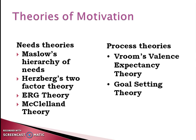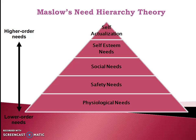The most traditional theory of motivation is Maslow's hierarchy of needs. It says there are five types of needs arranged in a hierarchy: physiological needs at the base, then safety needs, social needs, self-esteem needs, and finally self-actualization needs. The lower-order needs must be fulfilled before we move to higher-order needs, so it follows a strict hierarchy.